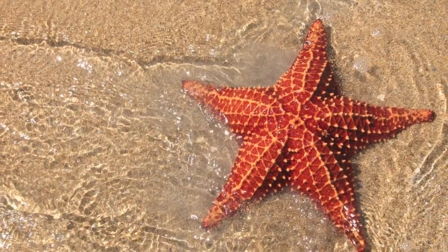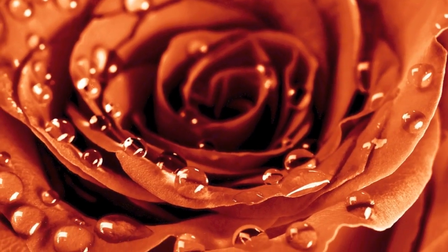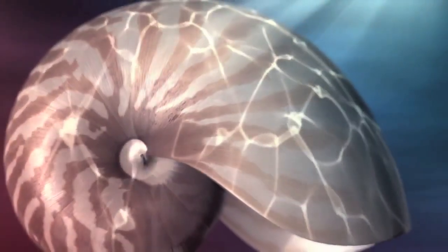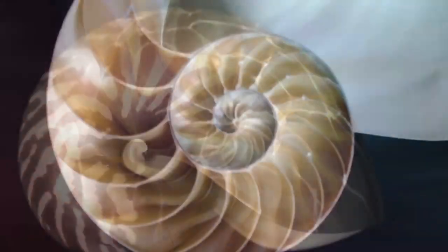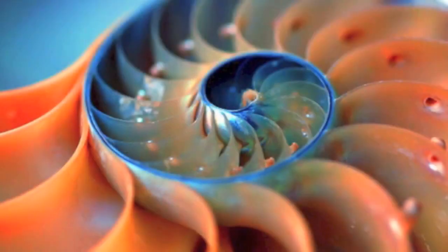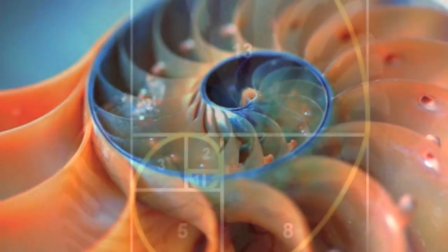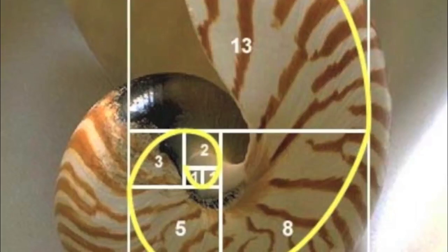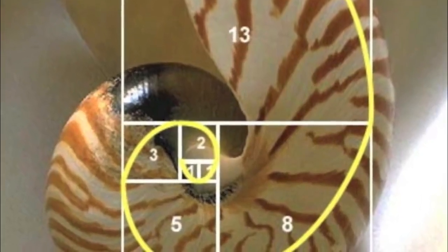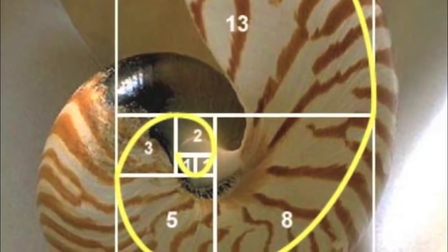Buds on trees, sand dollars, starfish, petals on flowers, and especially the nautilus shell are formed with this exact same blueprint. With each segment of growth, the nautilus adds to itself one more value on Fibonacci's scale.